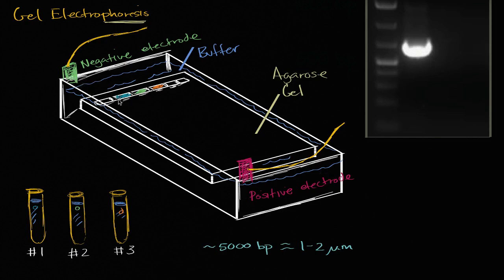Where the side where the wells are, where we're going to place the DNA, that's going to be where we're going to put the negative electrode. So that's our negative electrode there. And the other end is going to be our positive electrode. And we're going to use the fact that DNA has a negative charge at the typical pHs that we are going to be dealing with.